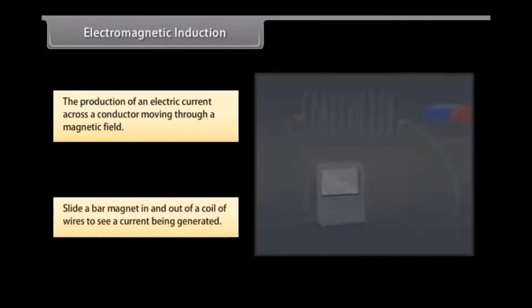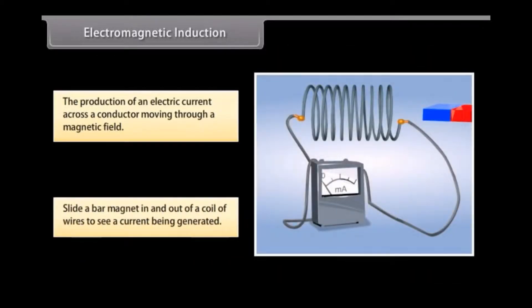Let us try sliding a bar magnet in and out of a coil of wires. You see that the wires generate a current. This is known as electromagnetic induction.